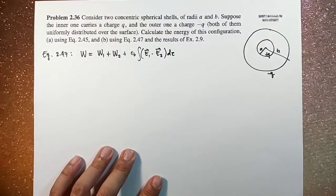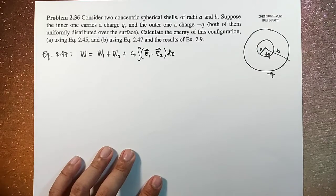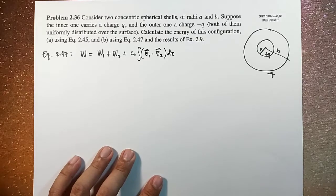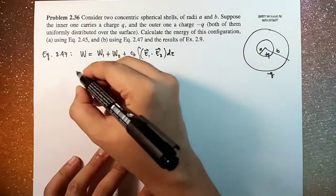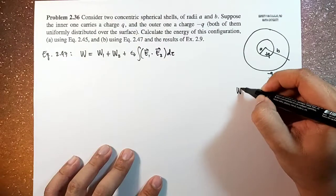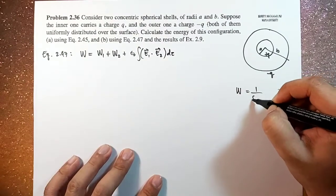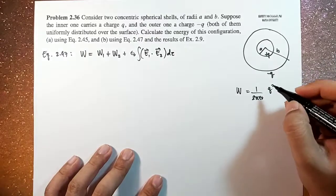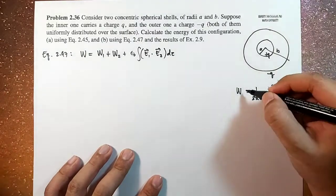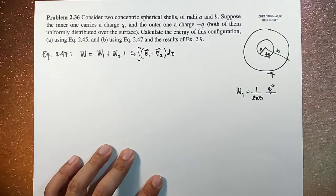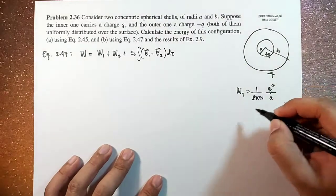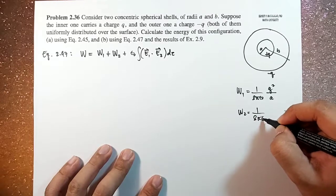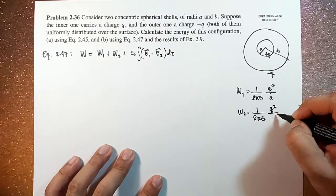Okay, so from example 2.9, the energy stored in a spherical shell is given by 1 over 8 pi epsilon naught times Q squared over the radius. So in this case, W1 would be for A and then W2 would be 1 over 8 pi epsilon naught Q squared over B.